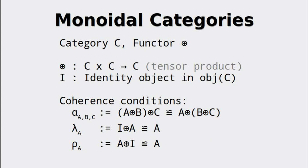So now we have defined what a functor is. Now we come to a category that uses such a functor internally: the monoidal category. It is defined by a category C and a functor called the tensor product, taking two objects of C and mapping them to a single element. Additionally, there has to exist an identity object and three natural transformations called alpha, lambda and rho. These transformations have to satisfy so-called coherence conditions. Alpha has to satisfy the associativity of the tensor product and lambda and rho have to satisfy consumption of the identity object as the first or second argument for the tensor product.